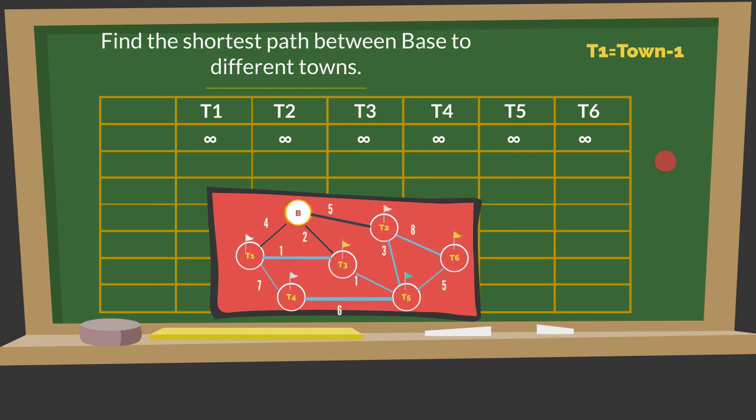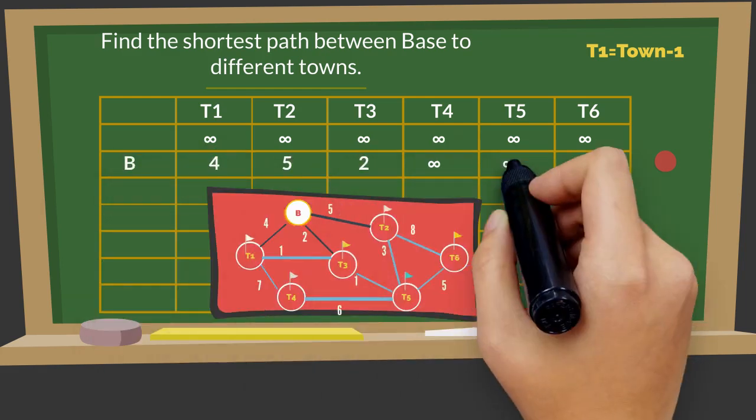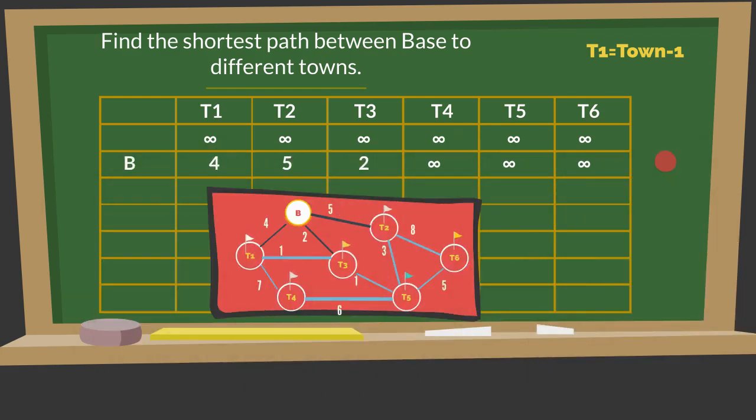Towns 4, 5, and 6 will maintain their previous values as they are not connected directly with base. The closest town directly connected to base is town 3. So town 3 will be the next source and 2 will be its final value.